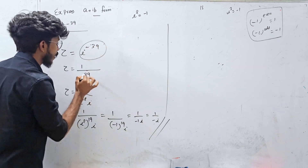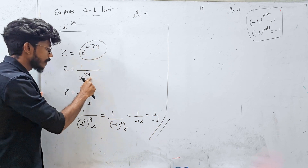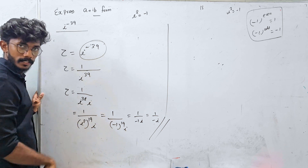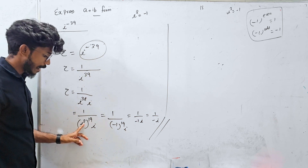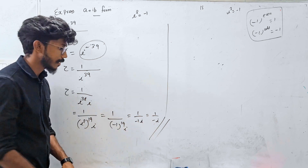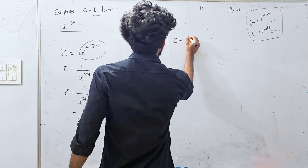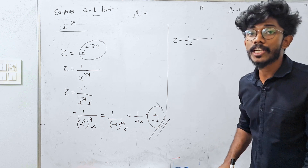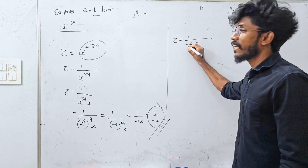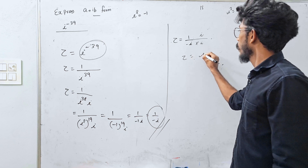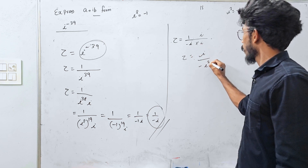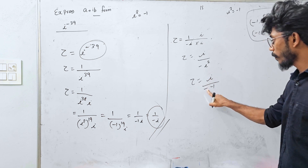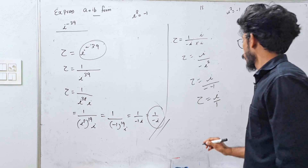For i raised to minus 39: we write it as 1 by i raised to 39. Split as (i squared) raised to 19 times i, which gives (minus 1) raised to 19 times i equals minus i in the denominator. Multiply numerator and denominator by the conjugate: multiply by minus i. Using i squared equals minus 1, the answer becomes i.